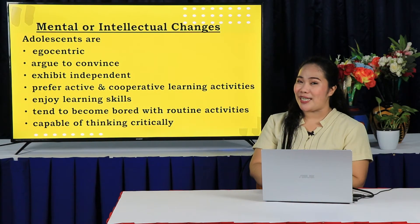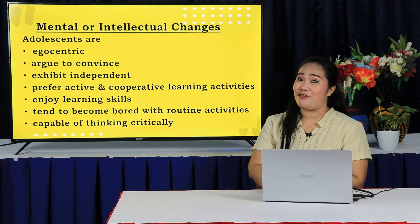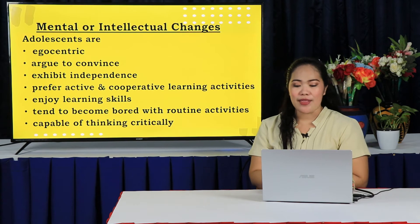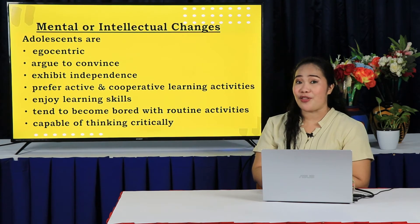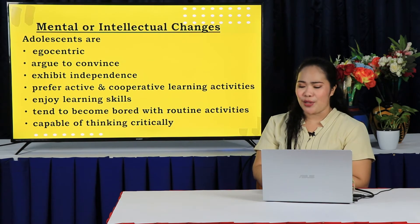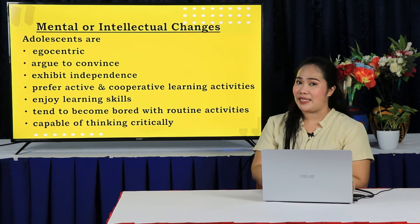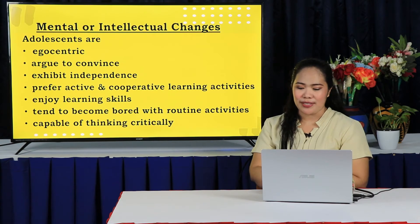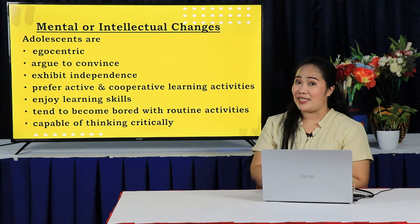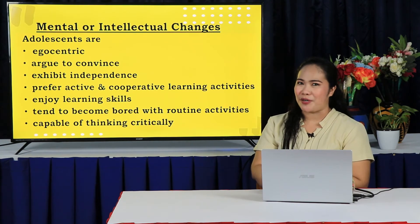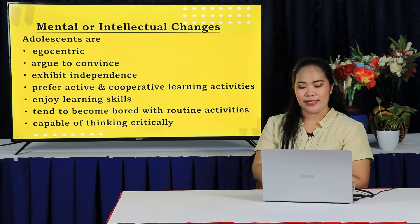For the mental or intellectual changes, adolescents experience rapid mental development. Adolescents are egocentric — they argue to convince and exhibit independent critical thought. They prefer active and cooperative learning activities over passive activities. They enjoy learning skills to apply to real-life problems and situations. They tend to become bored with routine activities and need to be challenged. They are capable of thinking critically, and can focus their attention on two or more things at the same time.